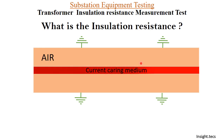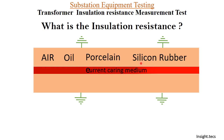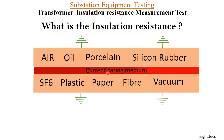The insulating medium can be air, oil, porcelain, silicon rubber, SF6 gas, plastic, paper, some fiber material, or even a vacuum — basically any medium or material which has some amount of resistance that will not allow current to flow from the current carrying medium or equipment directly to earth.